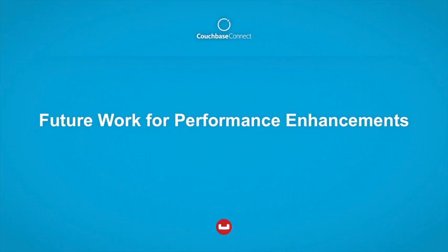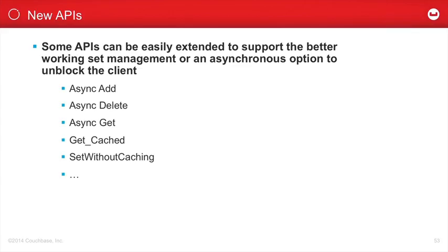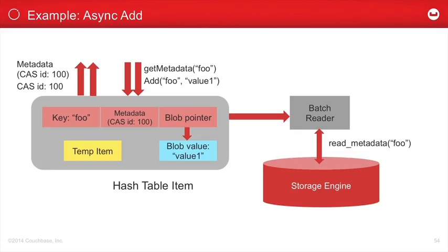Our plan to address the performance issues of full metadata ejection: The first is to extend some APIs — specifically, we plan to provide asynchronous ADD, DELETE, and GET operations. With asynchronous ADD, the client connection won't be blocked. The client issues an asynchronous ADD operation, we process it, and later the client can check the status. This way, client connections aren't blocked while the background fetcher reads metadata from disk.